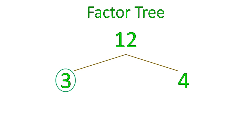And 3 is a prime number, so I'm going to circle it. Whenever we come to any prime numbers, we just go ahead and circle those. 4 is not a prime number. It is broken down into the factors of 2 and 2, which are then circled because they are both prime numbers.